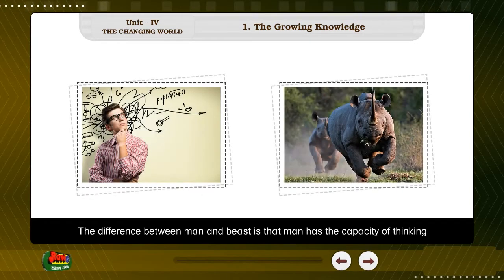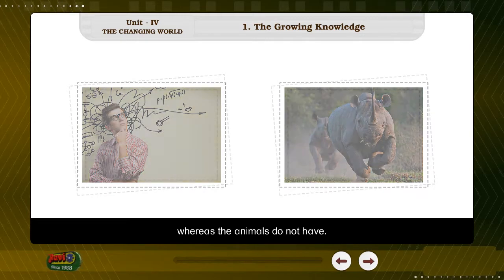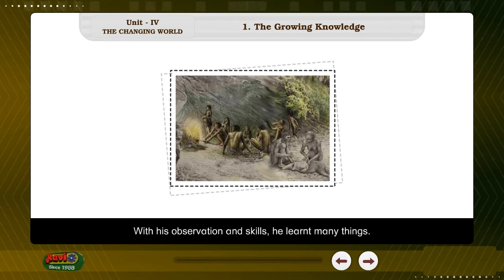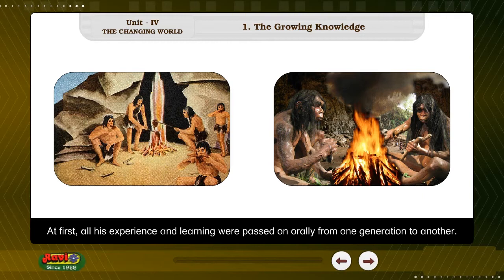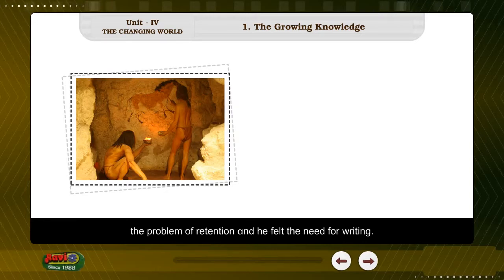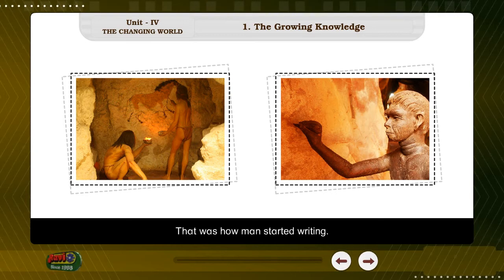The difference between man and beast is that man has the capacity of thinking, whereas animals do not. This rational faculty enabled man to progress. With his observation and skills, he learnt many things. At first, all his experience and learning were passed on orally from one generation to another. Then his knowledge increased, which raised the problem of retention, and he felt the need for writing. That was how man started writing.